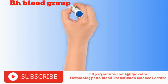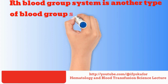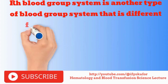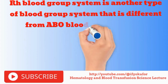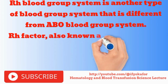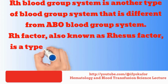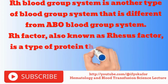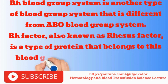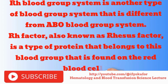ROH blood group system is another type of blood group system that is different from the ABO blood group system. ROH Factor, also known as Resus Factor, is a type of protein that belongs to this blood group that is found on the red blood cells.